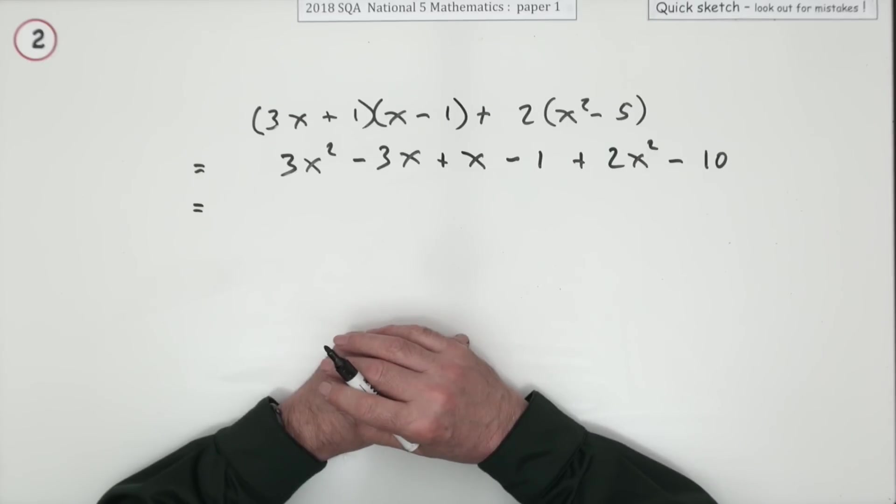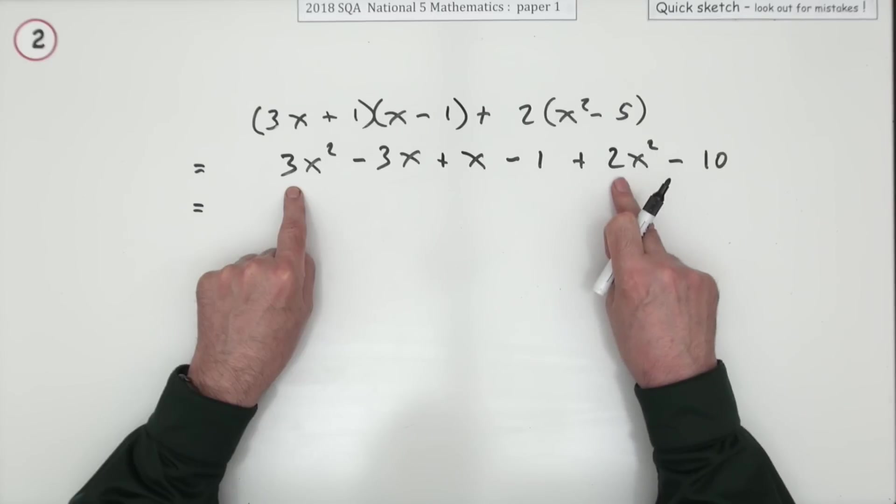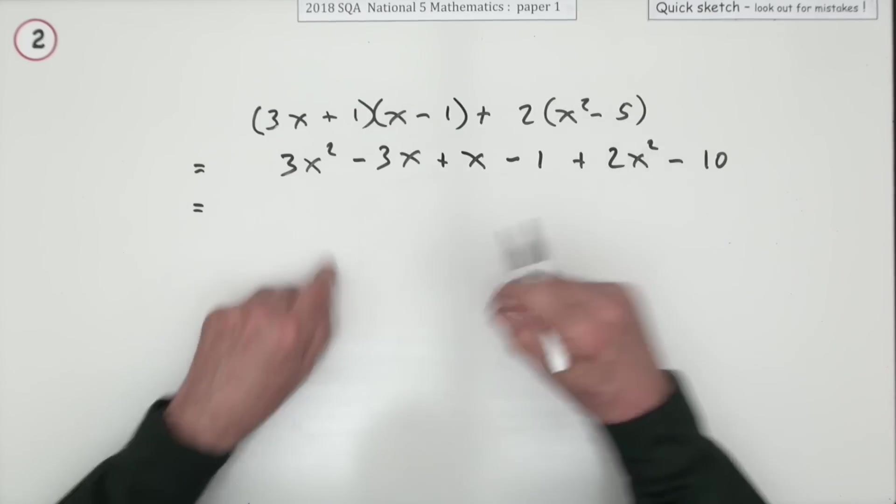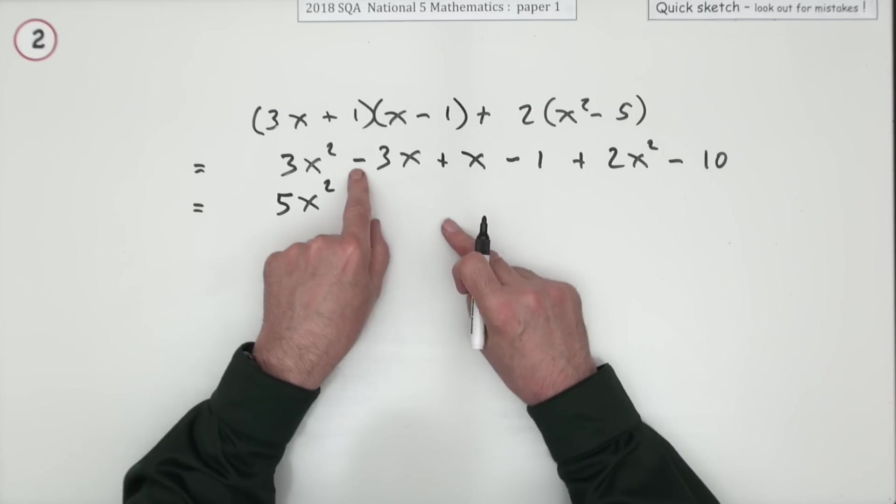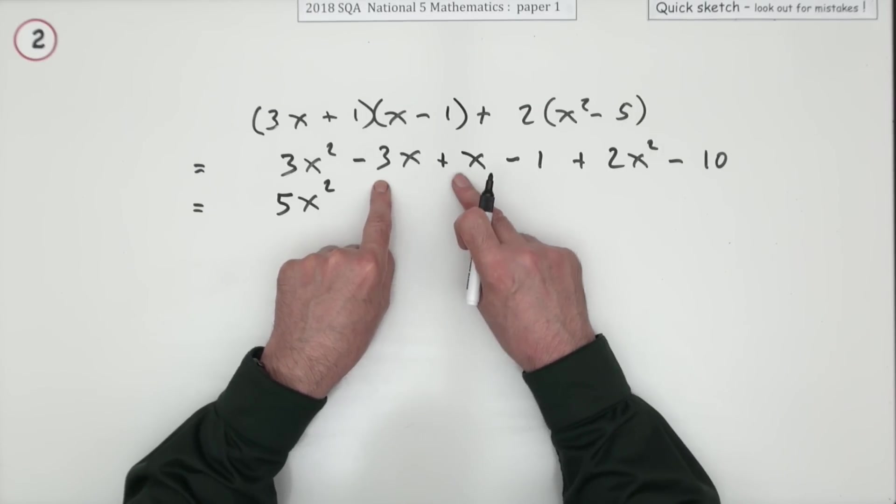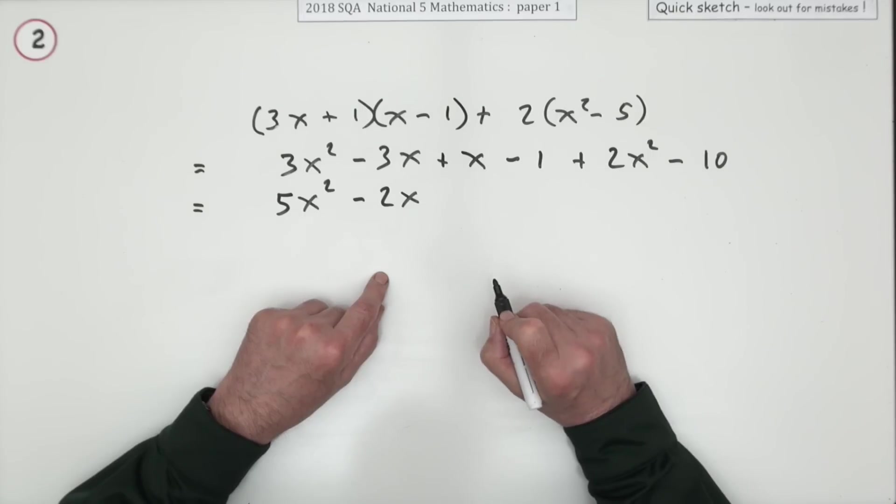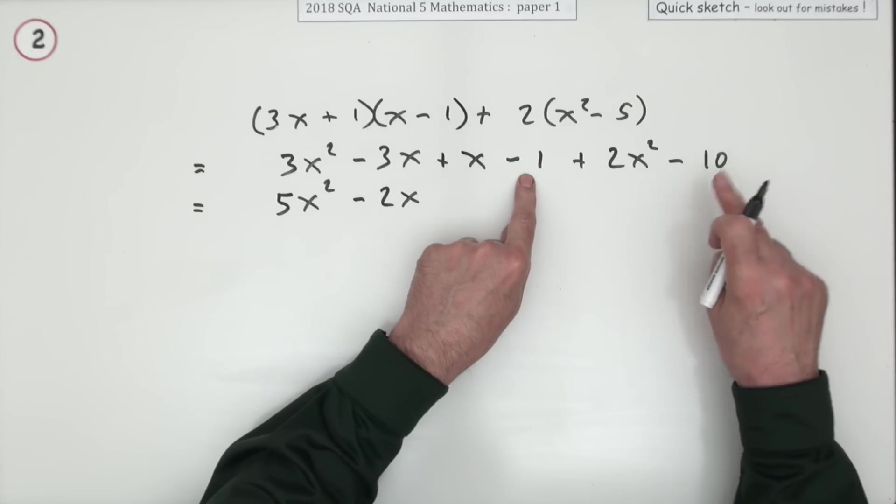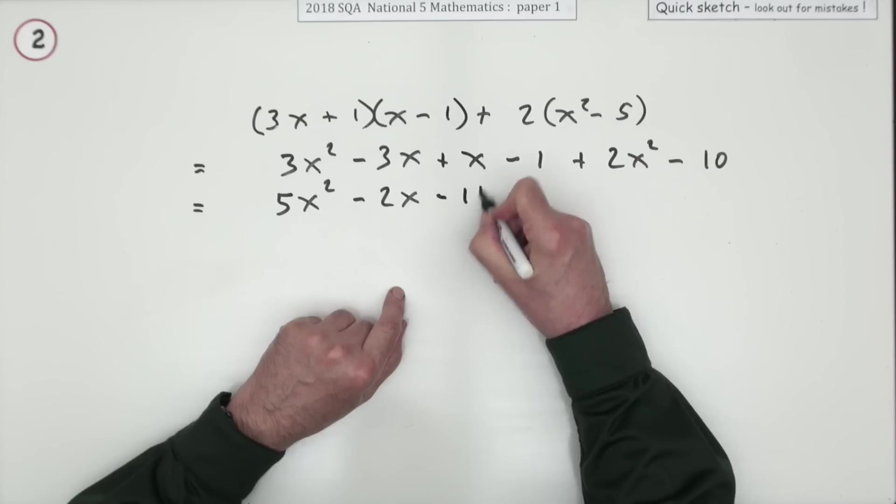Now it's just a case of adding up all the bits. x squared, I've got 2 of them, 3 plus 2. The only signs that matter are the signs immediately in front of the numbers, not any of the intervening signs. 3 plus 2 is 5, so 5x squared. x's, there's a negative 3 plus 1, that's negative 2x. Numbers, so the 2 numbers here, negative 1 and negative 10. They're both going back. Go 1 back and another 10 back, that's minus 11.